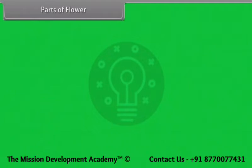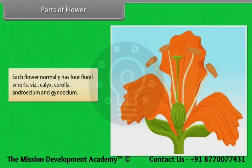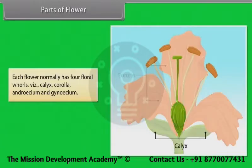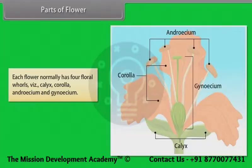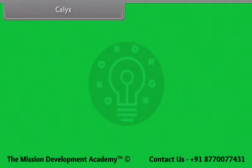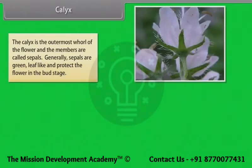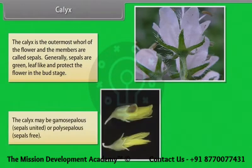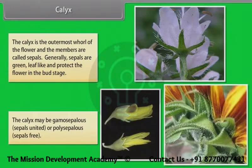Parts of flower: each flower normally has four floral whorls — calyx, corolla, androecium and gynoecium. The calyx is the outermost whorl of the flower and the members are called sepals. Generally sepals are green and leaf-like, and protect the flower in the bud stage. The calyx may be gamosepalous (sepals united) or polysepalous (sepals free).